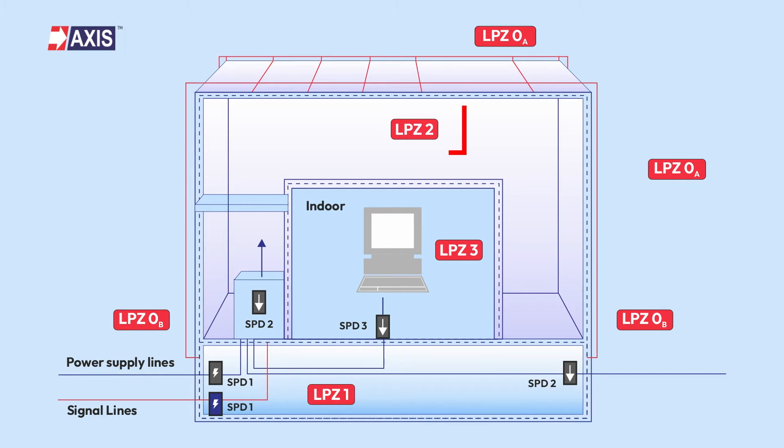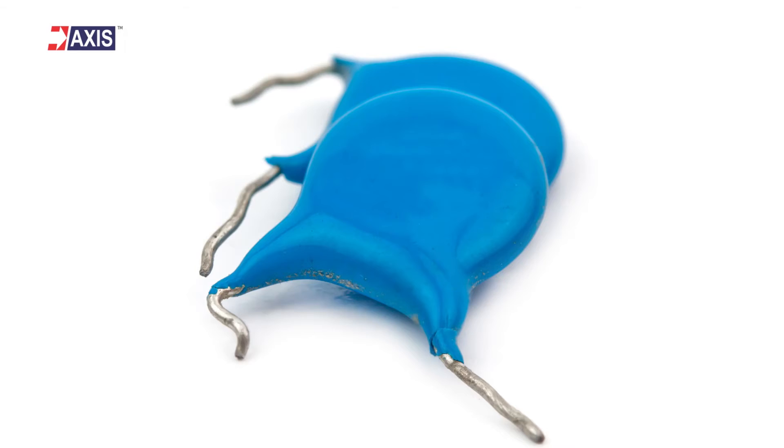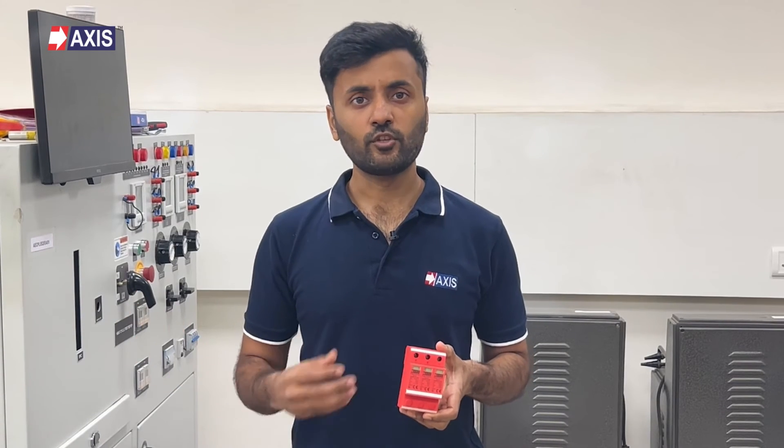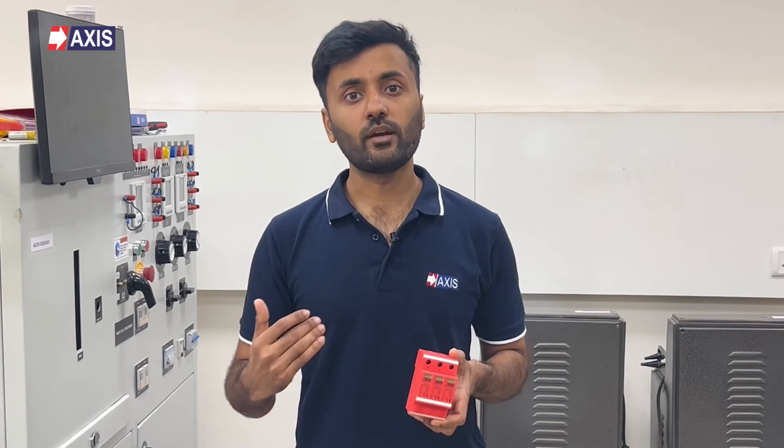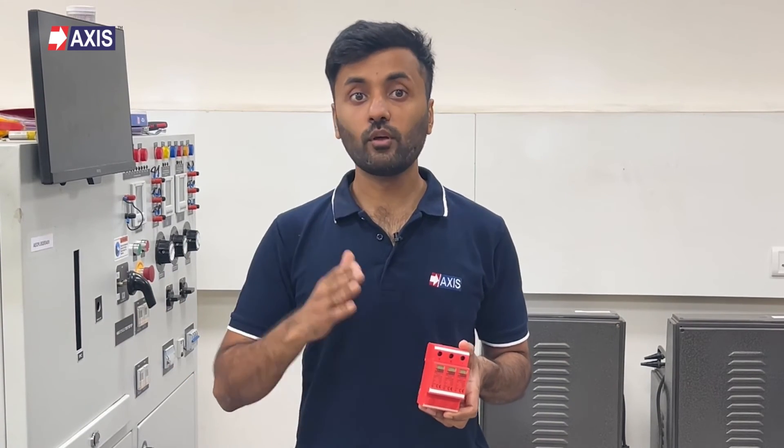Type 2 SPDs, also known as class C SPDs, are recommended in LPZ2 areas. Their main function is to handle switching surges. These SPDs are made from MOV — a metal oxide varistor — an electrical component whose resistance varies with the voltage. Type 2 SPDs respond faster than Type 1, but they have a lower energy handling capacity. Therefore, we recommend installing Type 2 SPDs in distribution panels that follow the main panel where the Type 1 SPD is installed.